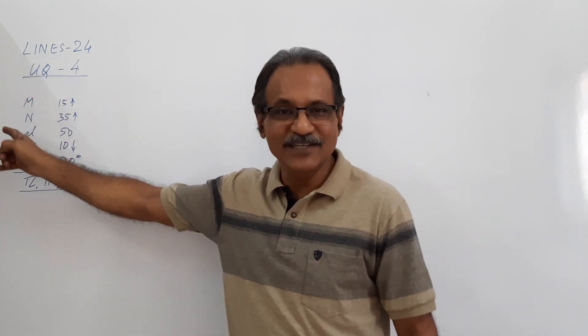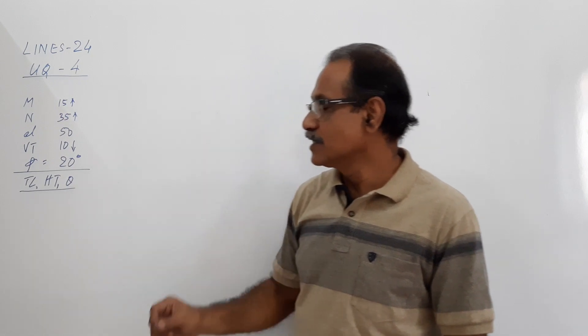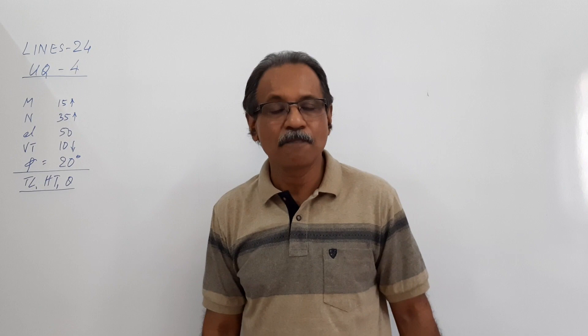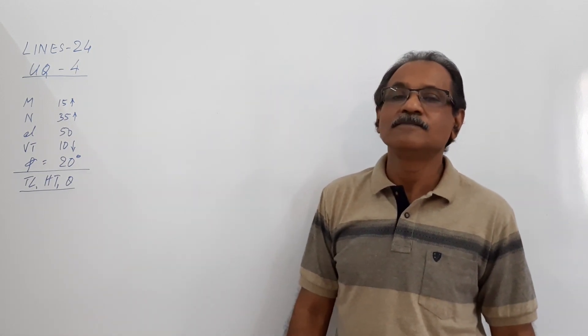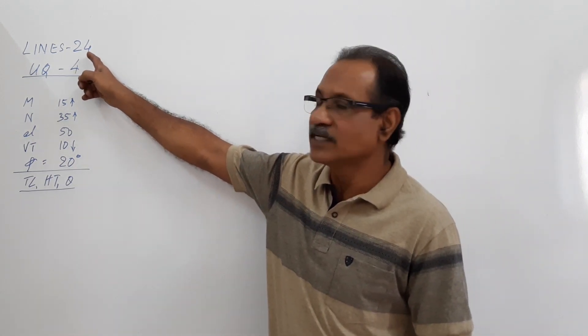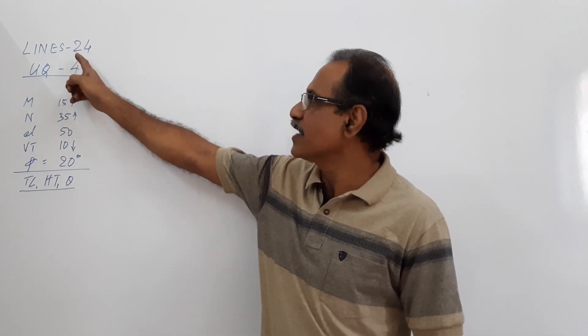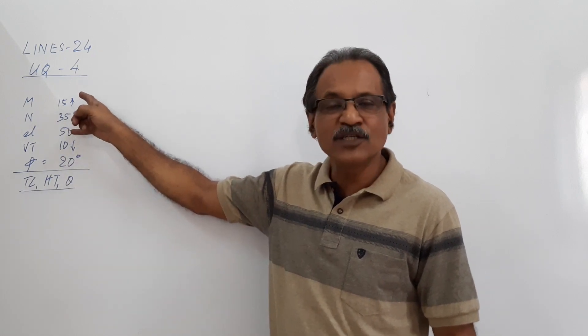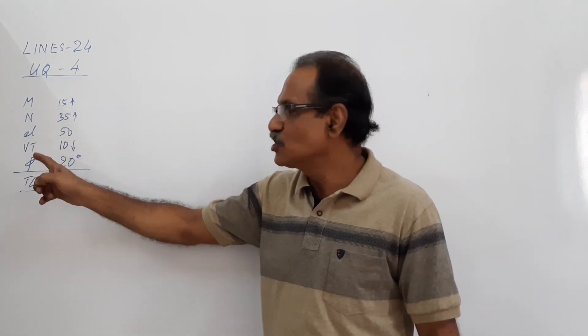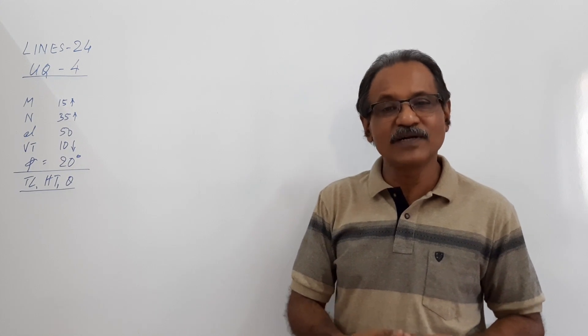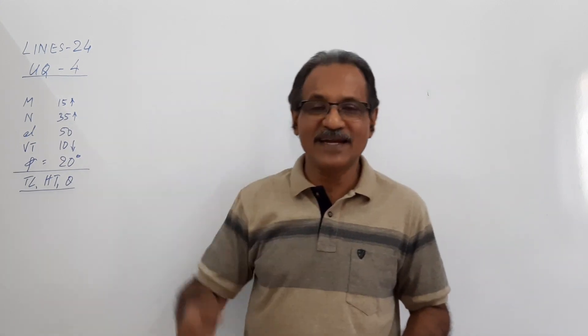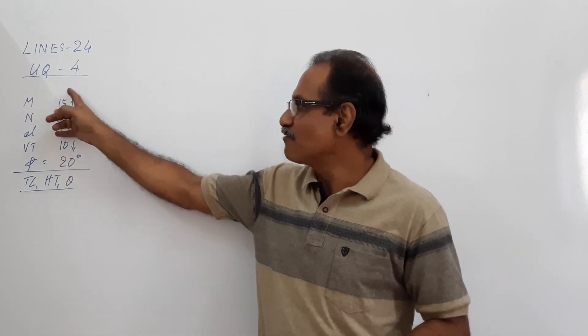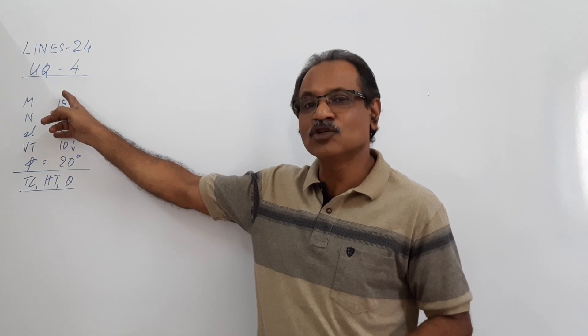You have seen a similar case - this data is to draw the elevation. Then you are given the position of VT and phi. In the previous question, question number 23, you were given information to draw the elevation and then HT and theta were given. You drew an assumed plan, an arbitrary plan. Here, instead of that, after giving the information to draw the elevation, VT and phi are given.